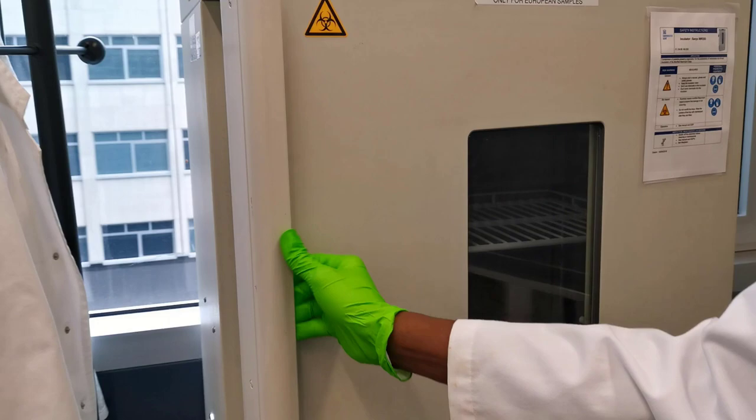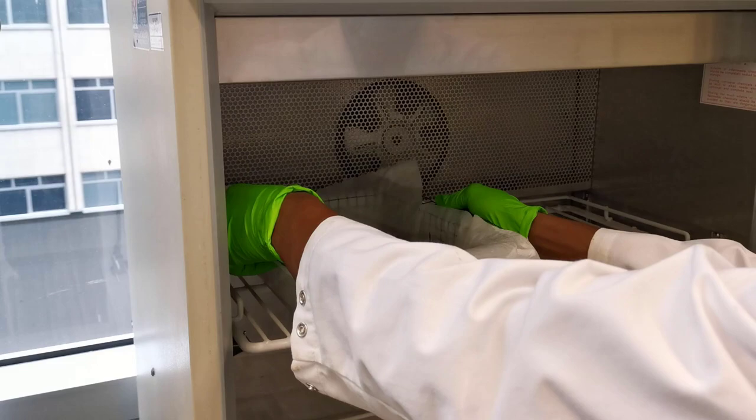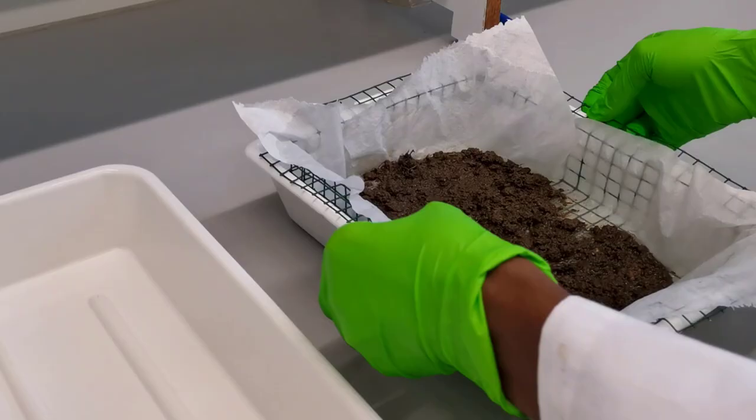During incubation for at least 24 hours, the vermiform motile nematodes present in the soil should have moved into the water. Now remove the extraction tray from the incubator and carefully remove the wire mesh which holds the soil from the plastic tray. Now collect the nematode suspension in a beaker.